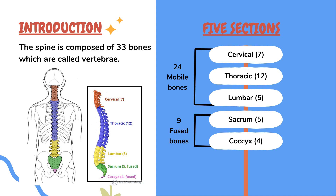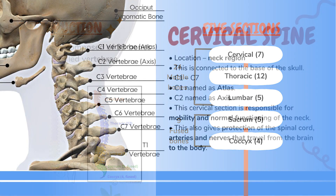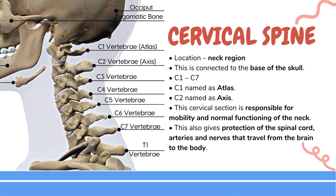Now we will see each section one by one. First one: the cervical section. In cervical, we have 7 bones — C1 to C7. This is connected from the base of the skull. Neck bones are named as cervical bones. C1 and C2 have specific names: C1 bone is named as atlas and C2 bone is named as axis.